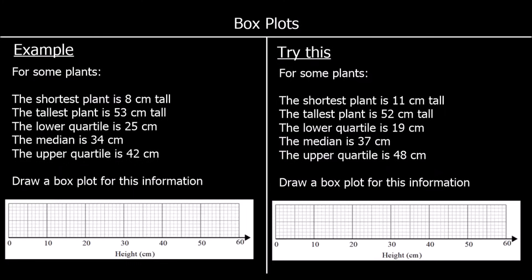Box plots show us how data is distributed. Here we've got some summary data for the heights of plants. We are told the shortest plant is 8cm tall, so on a box plot that means there's a line at 8cm. The tallest plant is 53cm tall, so again the tallest plant gets a line on the box plot.